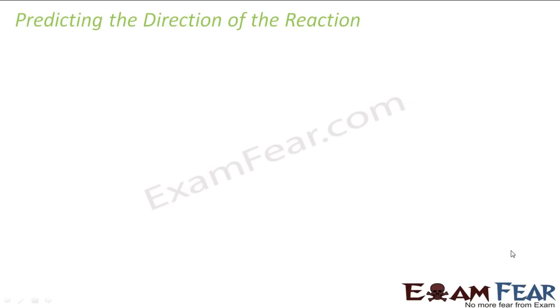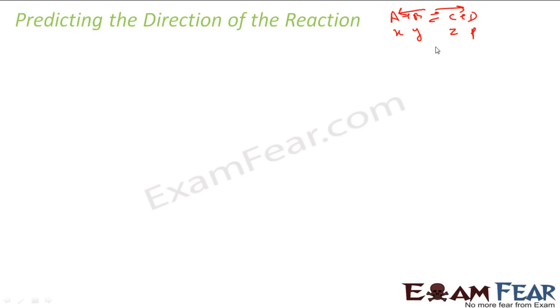Now, if I want to find the direction of a reaction — whether the reaction will go on the left-hand side or the right-hand side — how will I find it? I have told you the percentage, like 80%, 70%, 90% of the reactants will react to form products. But the question is: what is the direction? For example, if I have A + B ⇌ C + D, and I give x moles of A, y moles of B, z moles of C, and t moles of D, I'm not sure whether the reaction will go in the forward or backward direction — it depends on the initial concentrations of A, B, C, and D.